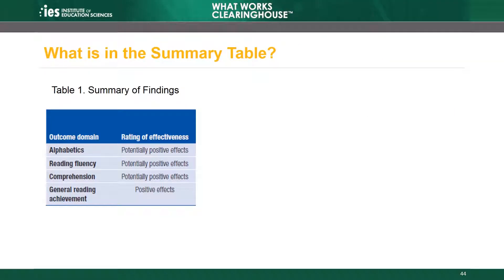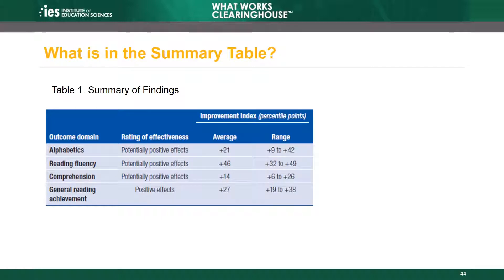First, the table reports the rating of effectiveness. In this case, there are potentially positive effects for alphabetics, reading fluency, and comprehension, and positive effects for general reading achievement. The next two columns of the table summarize the improvement indices from the studies of the intervention that meet WWC design standards. One column presents the average improvement index.